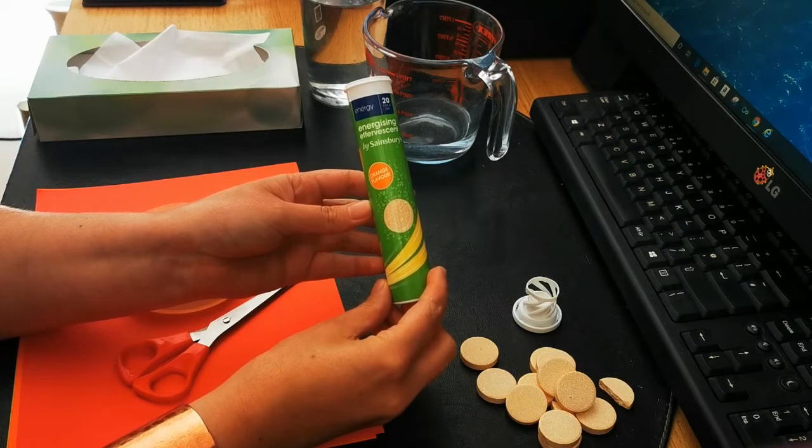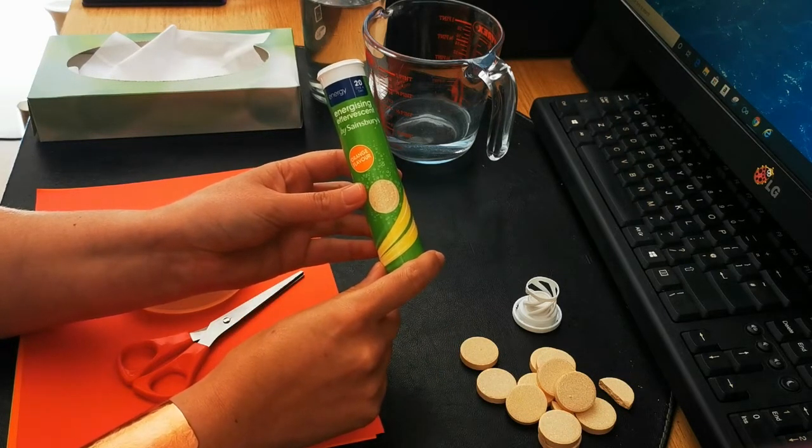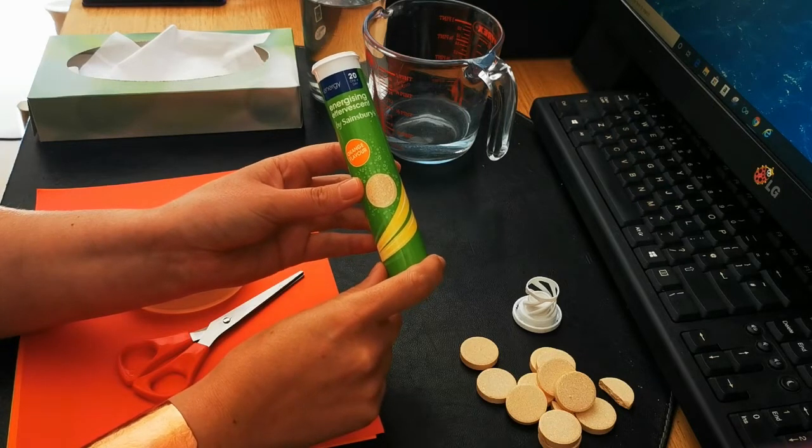So these tablets are effervescent tablets and they come in this plastic tube which we're going to use to produce the body of the rocket. And the tablets are going to provide the fuel for the rocket.